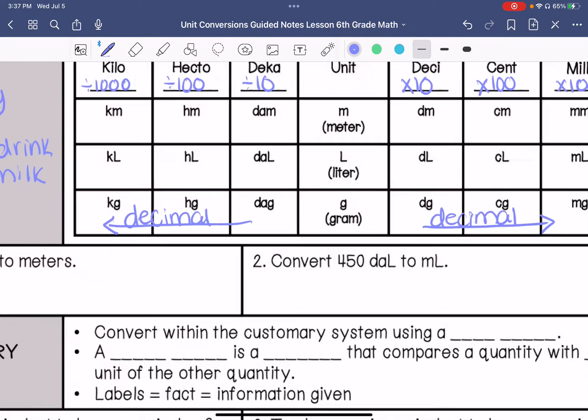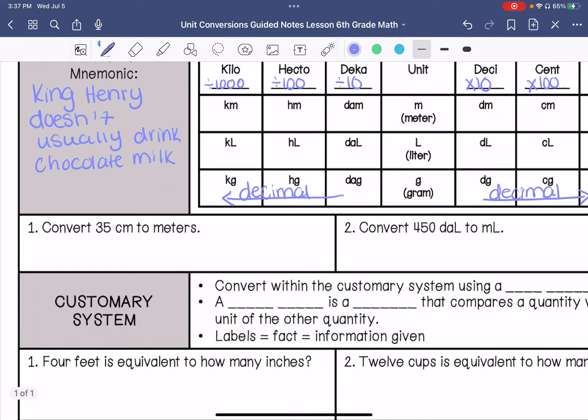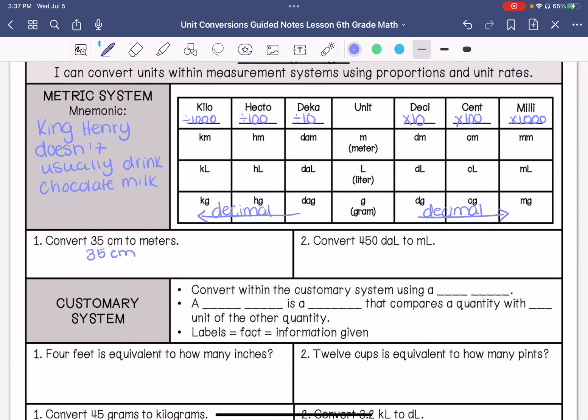For example, if you were converting 35 centimeters to meters, you are going to move your decimal point one, two places to the left. So that would be 0.35 meters.